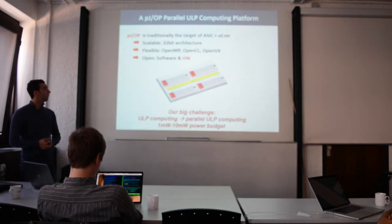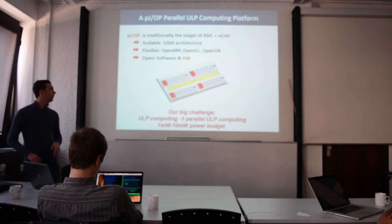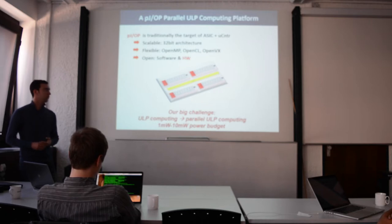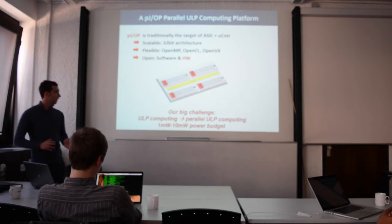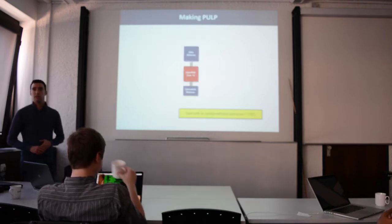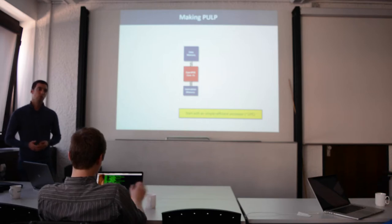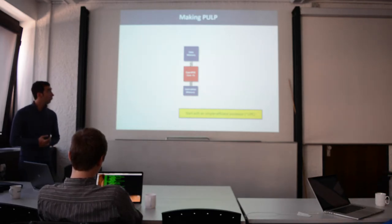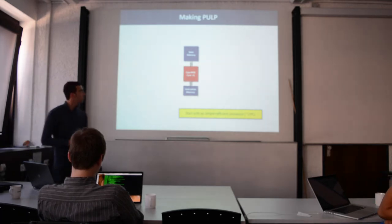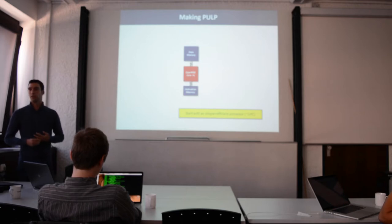We want to move the paradigm of ultra-low-power platforms from a single core plus accelerator to a multi-core parallel computing platform, constrained by a power budget ranging from 1 mW to 10 mW. The starting point of our PULP platform is a highly optimized implementation of the OpenRISC processor. We started to work on the evolution of the OpenRISC last year.